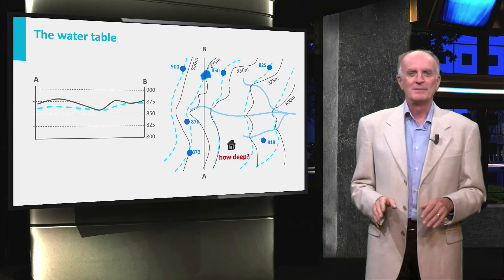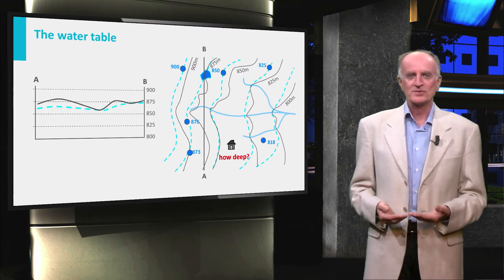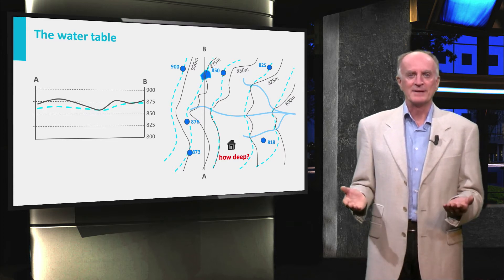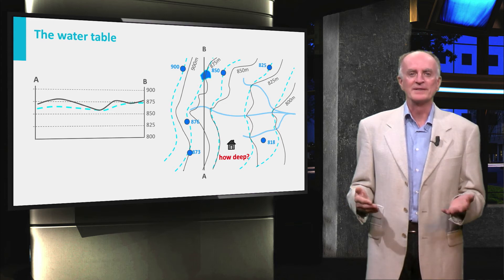With this kind of maps, you will be able to predict the position of the water table in other localities of the map, for instance where people want to build a house.